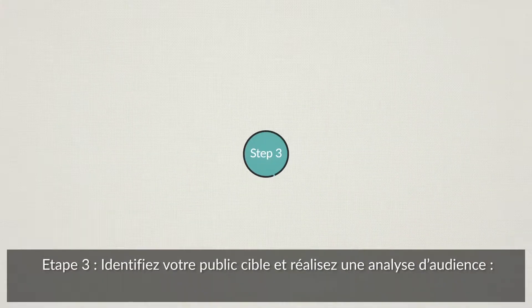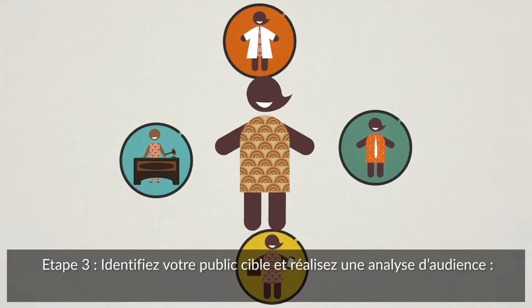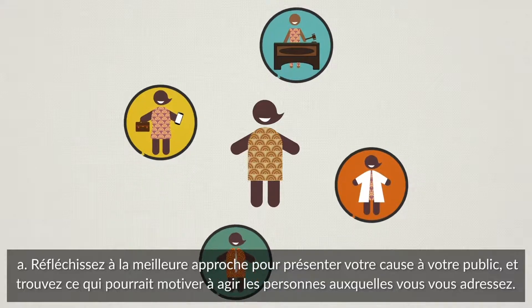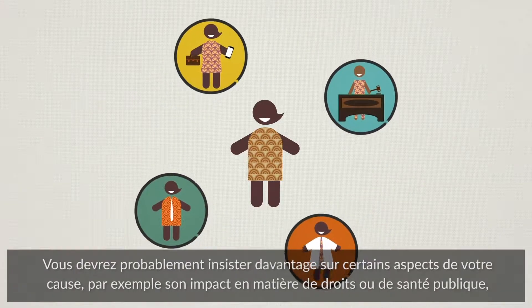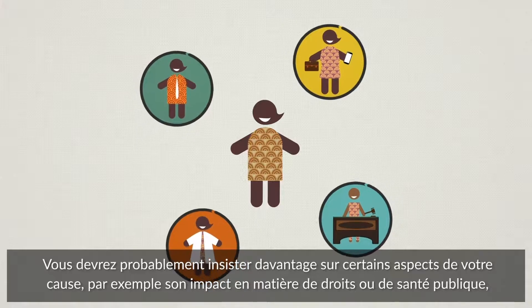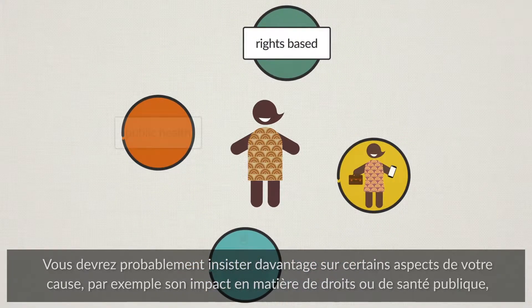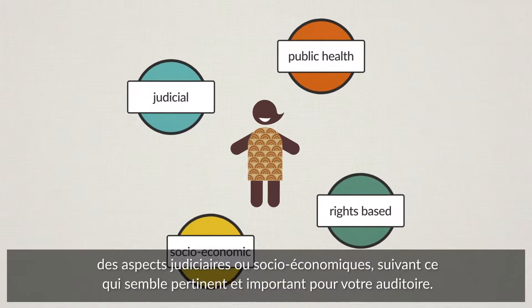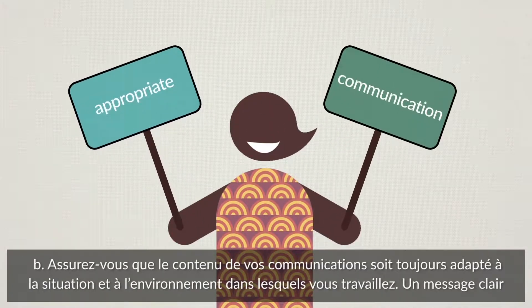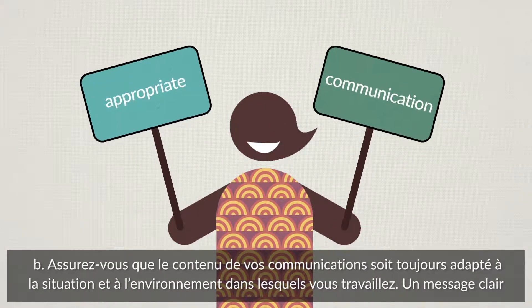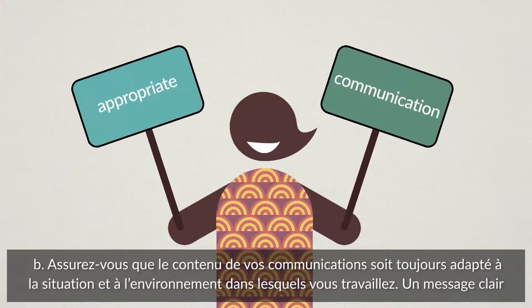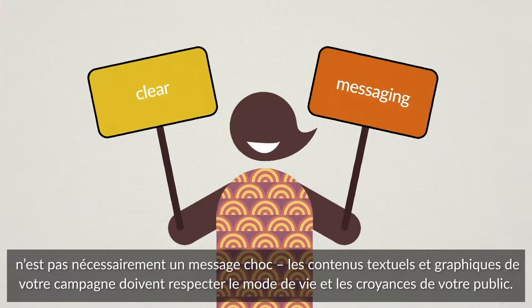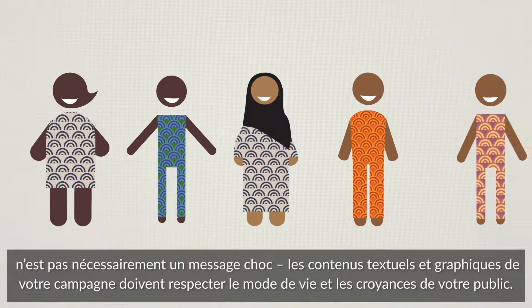Step 3. Identify your audience and conduct an audience analysis. Learn the best way to present your cause to your audience and find out what motivates them to take action. For example, you might need to emphasise certain aspects of your cause — such as rights-based, public health, judicial or socio-economic implications — depending on what is most relevant and important to your audience. Make sure everything you communicate is appropriate to the situation and environment you're working in. Clear messaging is not always bold messaging; your words and images in your campaign should stay sensitive to the lives and beliefs of your audience.